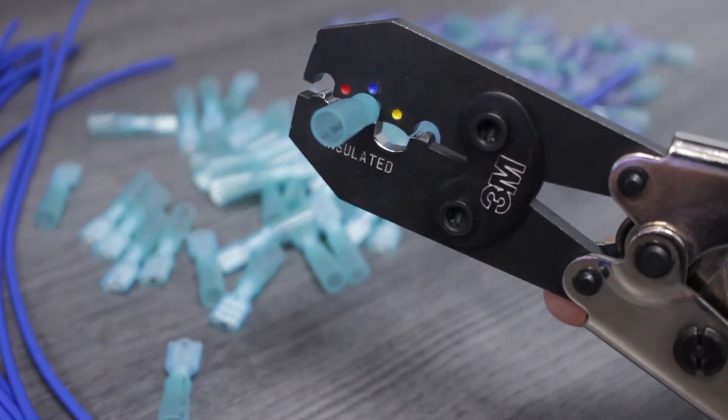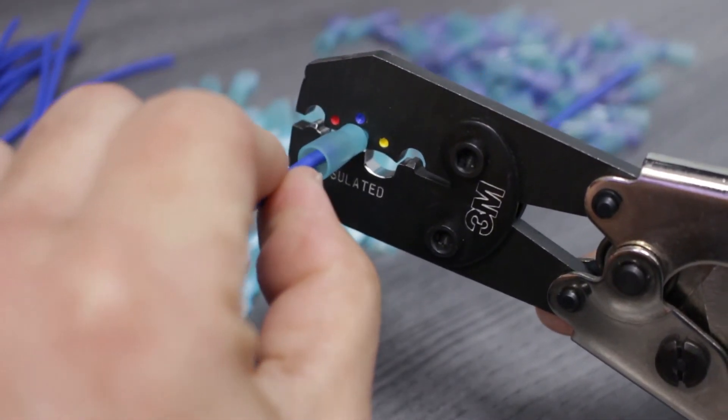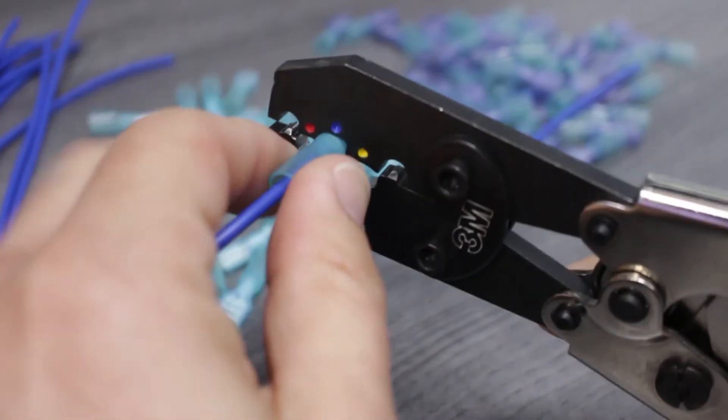Now, we'll insert the wire into the disconnect body making sure the insulation butts up to the barrel of the disconnect. By closing the tool, we have completed the ratcheting cycle and successfully crimped the disconnect.